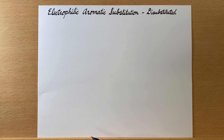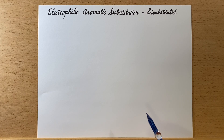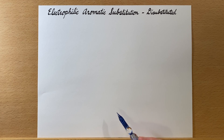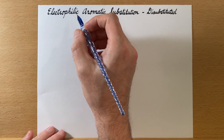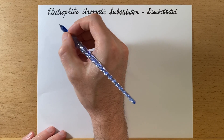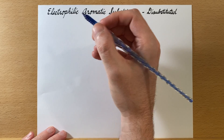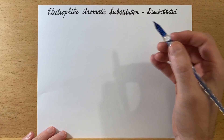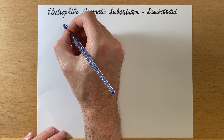So far, all of the reactions that we've talked about involving ortho, meta, para direction have had one substituent on them, but it is conceivable that we could have more than one substituent. So let's look at disubstituted rings, and of course this concept will extend into further substitutions on the molecules.